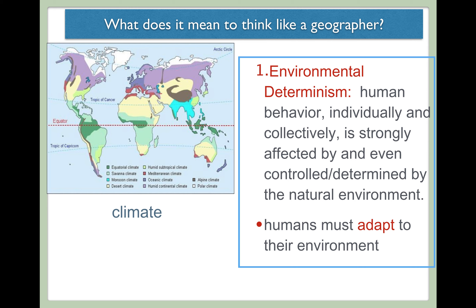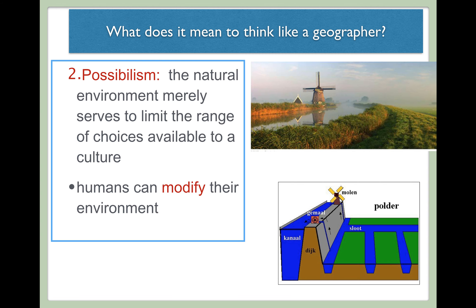Environmental determinism has largely been replaced by a different belief called possibilism. On the AP exam, this could be called the possibilist approach or possibilism — these variations all correspond to the same general school of thought or philosophy.